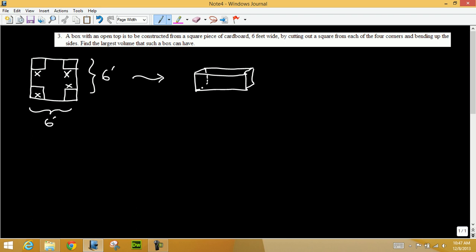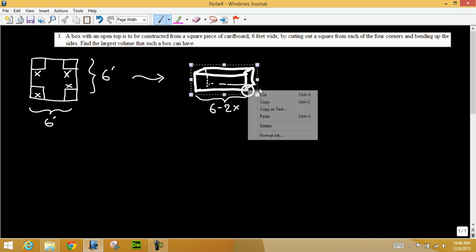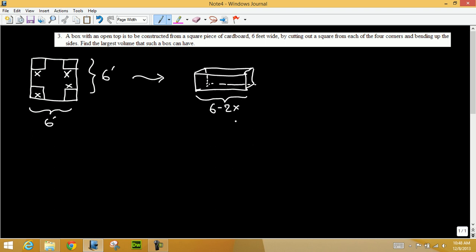Something like this one. In any case, now the length of this box will be the total would be six, but we are cutting out X, X, so six minus two X. Same thing for width, that's also six minus two X, and the height is just X. Now since we have only one variable, we don't have to write the constraint.